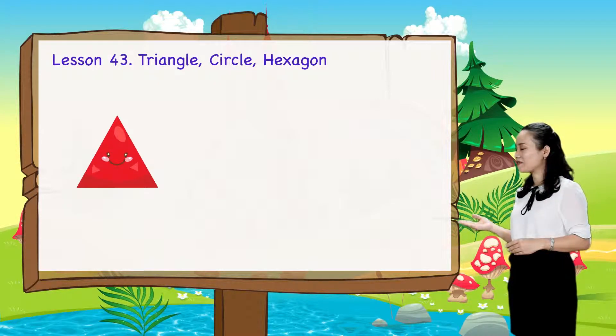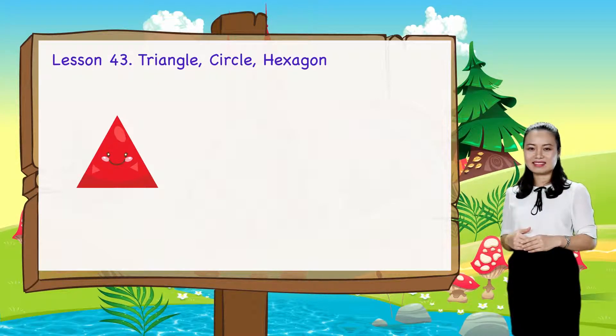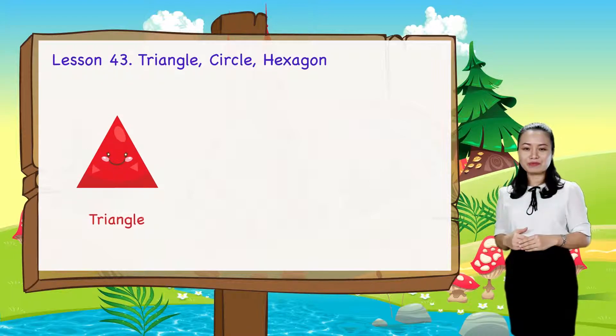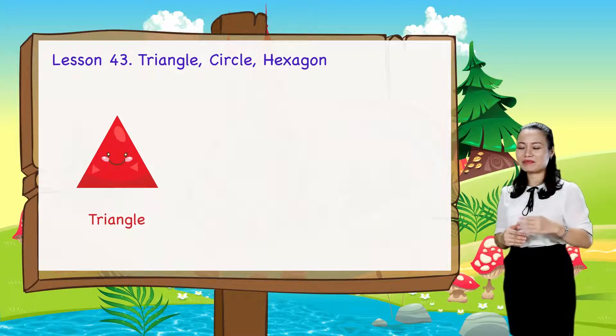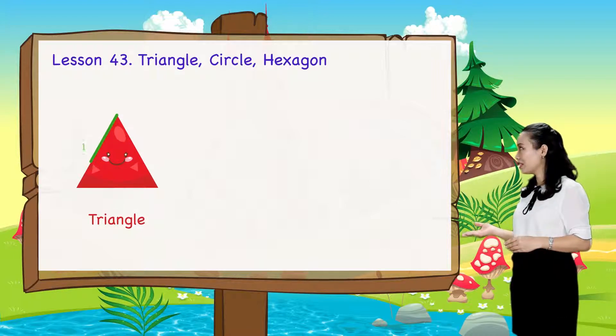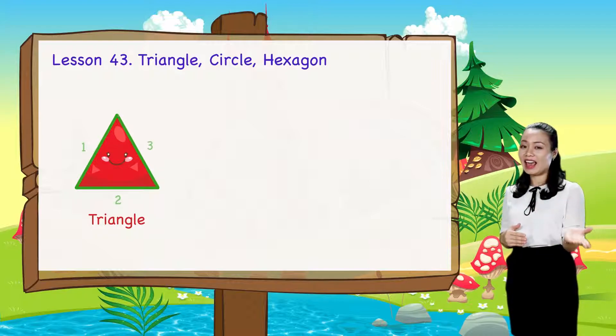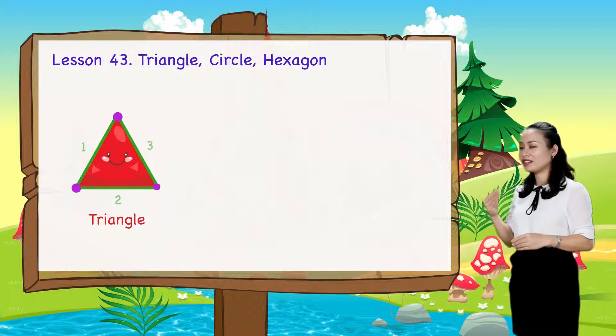Look. This is a triangle. It has 3 straight sides and 3 corners.